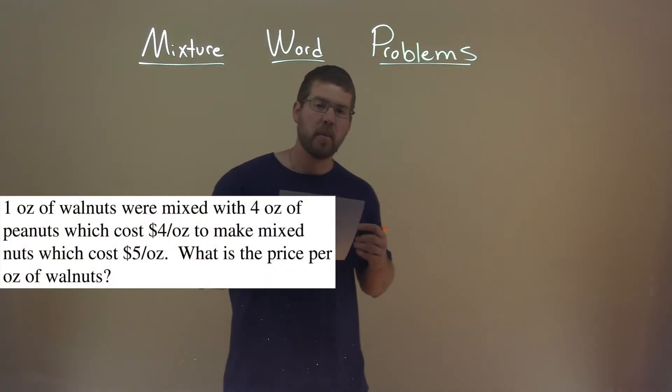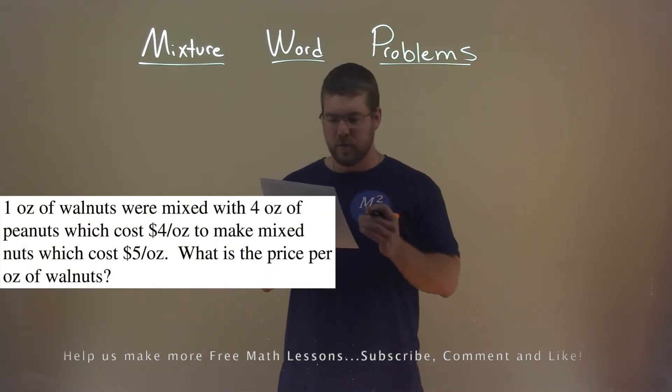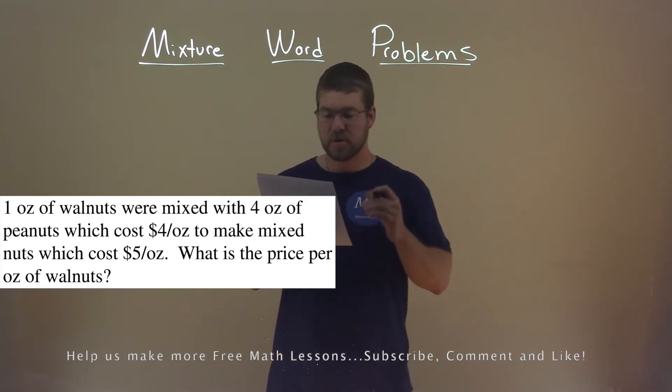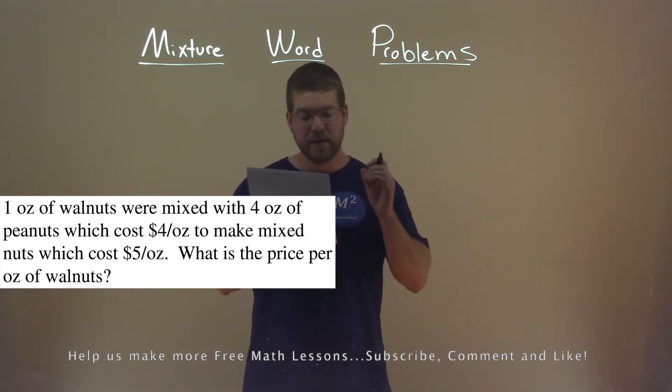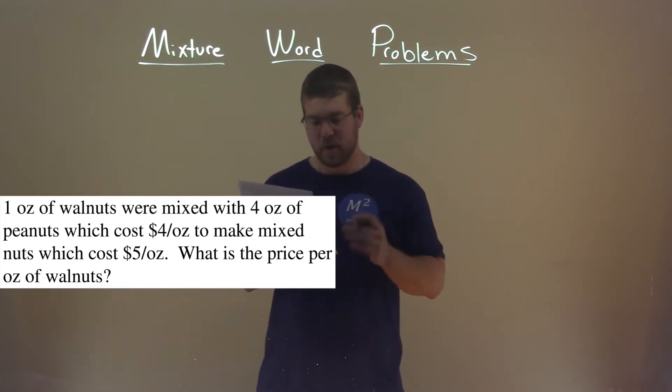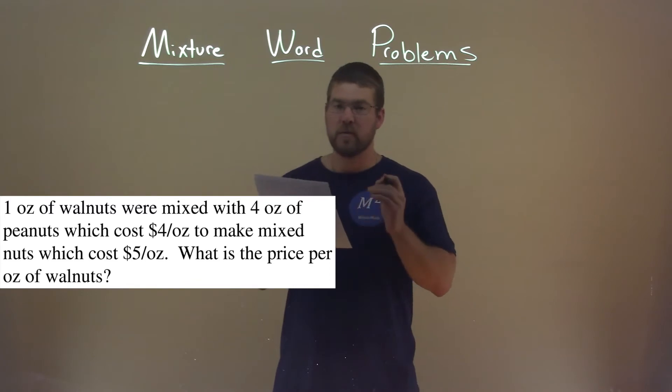We're given this problem right here. One ounce of walnuts were mixed with four ounces of peanuts, which costs $4 per ounce, to make mixed nuts, which costs $5 per ounce. What is the price per ounce of walnuts?